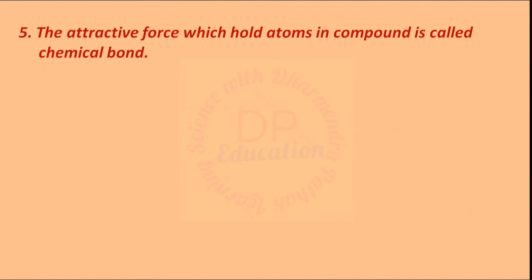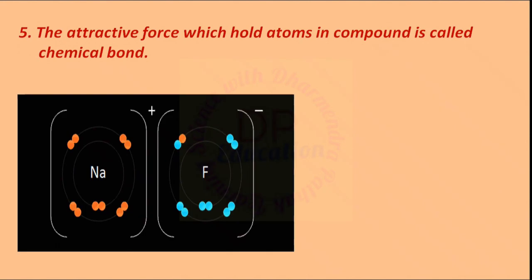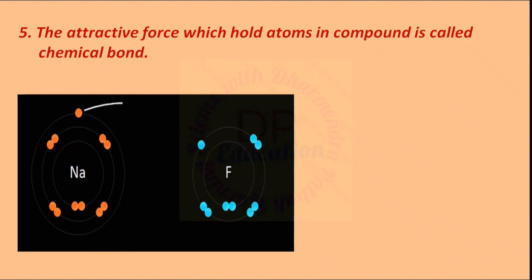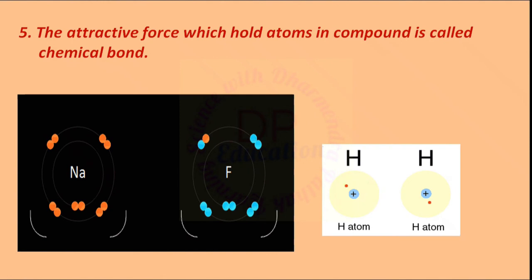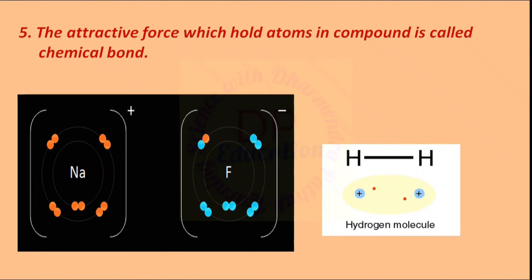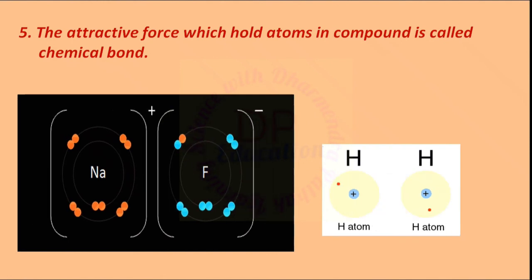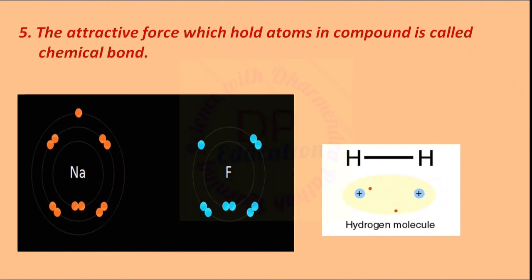The attractive force which holds atoms together in a compound is called a chemical bond. In this way, a chemical bond is formed between atoms and a compound exists.